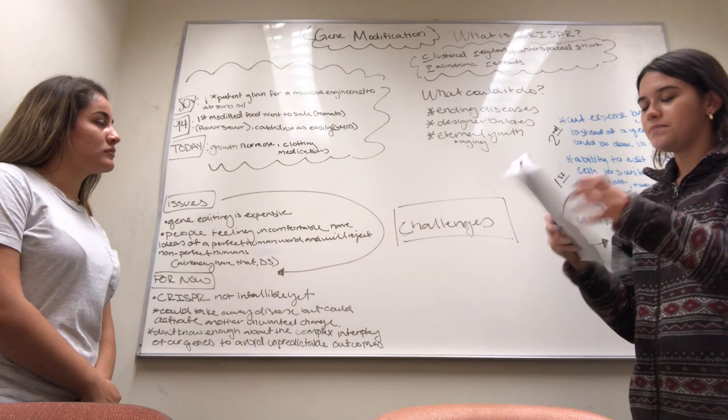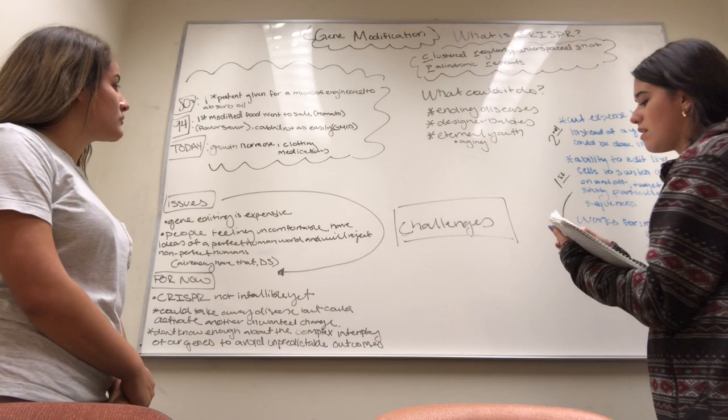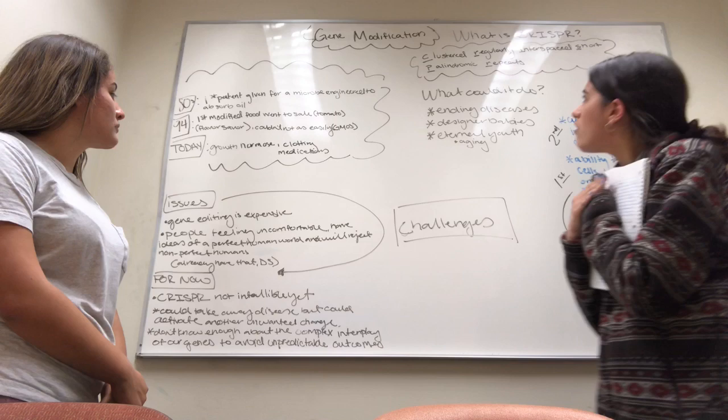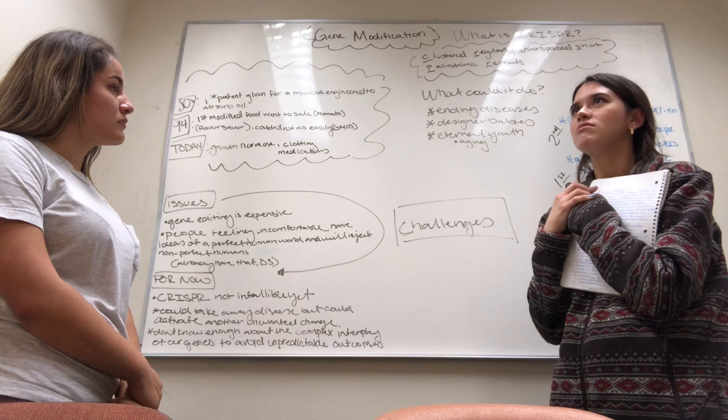They also say you can achieve eternal youth. By using gene modification, you can reverse or even slow down aging in the future, because now two-thirds of 150,000 people die from age-related causes.